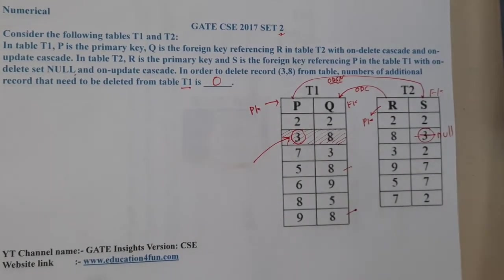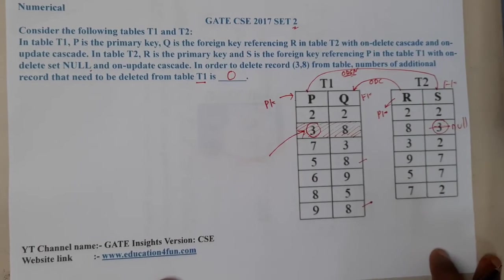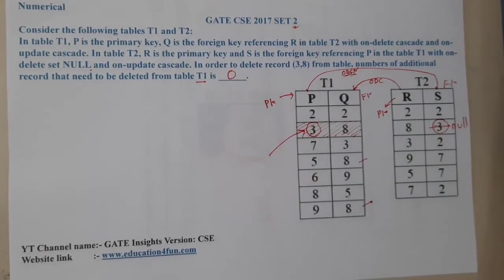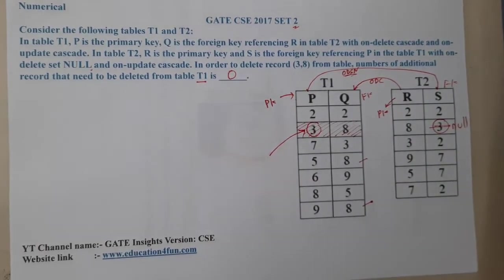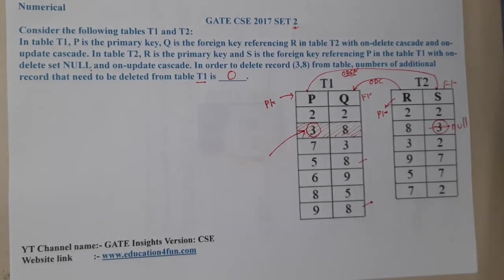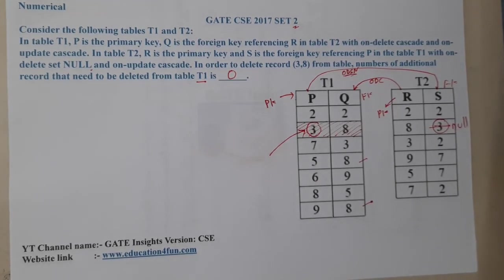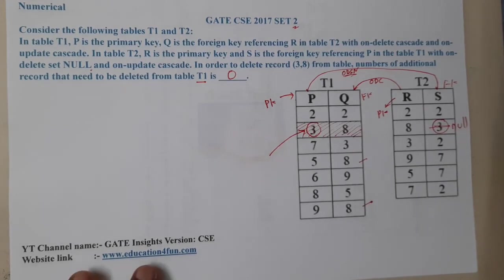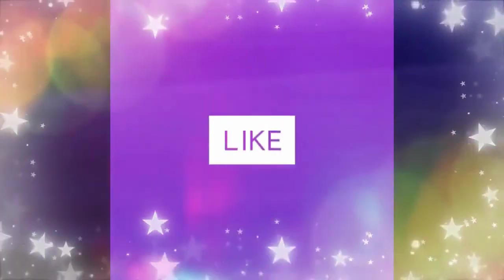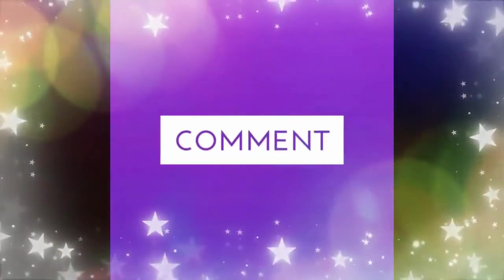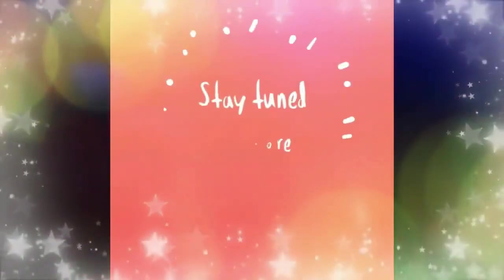Now you understand the difference between ON DELETE SET NULL and ON DELETE CASCADE. I hope everyone got a clear idea on this question. In the next lecture, let us continue with the next question. Thank you — like, share, and subscribe for more awesome videos.